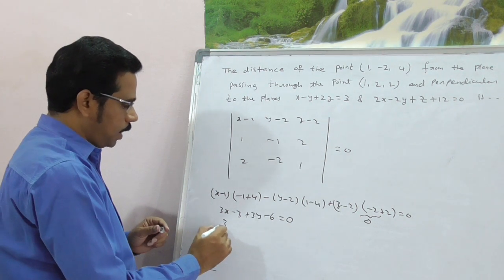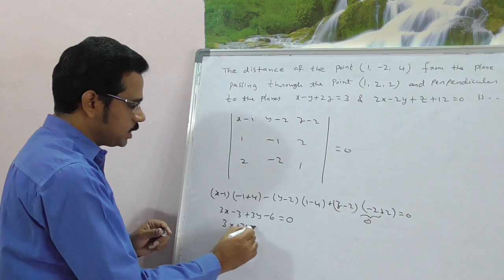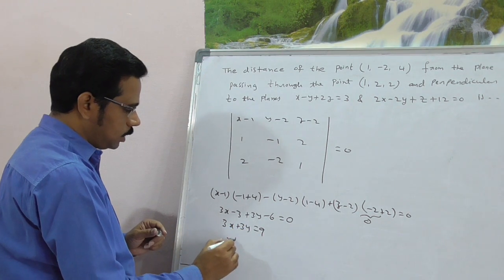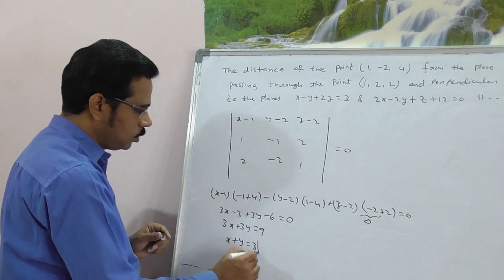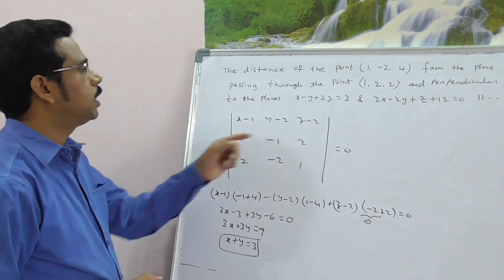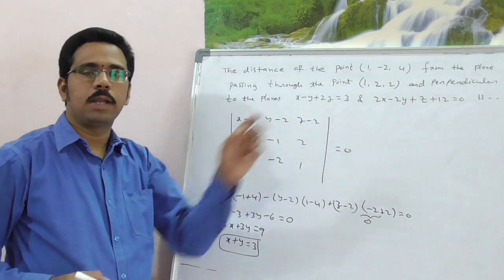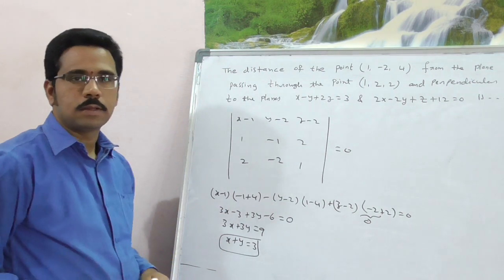Therefore, the required plane 3X + 3Y is equal to 9, that is nothing but X + Y is equal to 3. This is the plane which passing through (1, 2, 2) and perpendicular to the given two lines. Right?